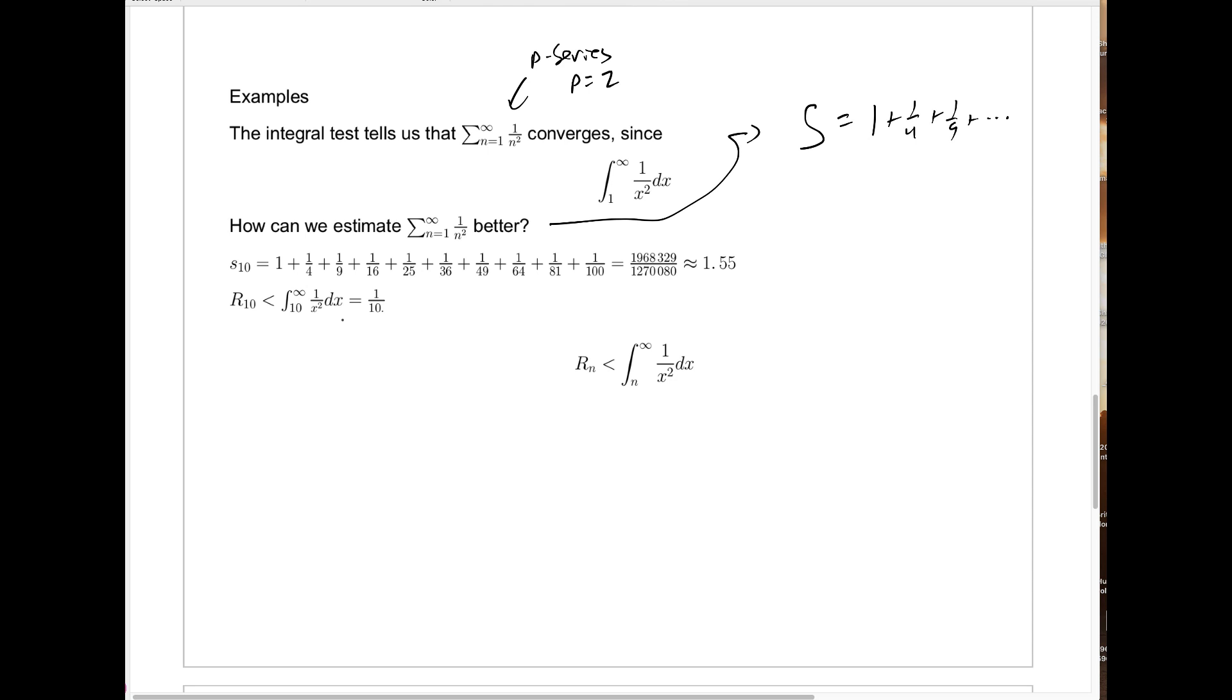That's where the integral test remainder estimate comes in. We know that the actual error between the full sum S and the partial sum S10 is what we give the name R10 to. And by the error estimate, R10 is bounded above. It's something less than the integral from 10 to infinity of 1 over x squared dx. We can compute this as the limit as b goes to infinity of the integral from 10 to b of 1 over x squared dx. We evaluate the integral, which is minus 1 over x from 10 to b. This is a limit as b goes to infinity of minus 1 over b plus 1 tenth. And as b goes to infinity, that first term goes to 0. So the value of the integral is 1 tenth.